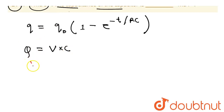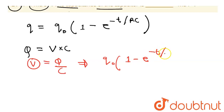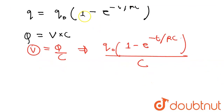So from here, our potential V will be equal to Q over C. So we can write the full expression for V, that is Q over C, as Q0 over C into 1 minus e raised to the power minus t over RC, which simplifies to V0 into 1 minus e raised to the power minus t over RC.